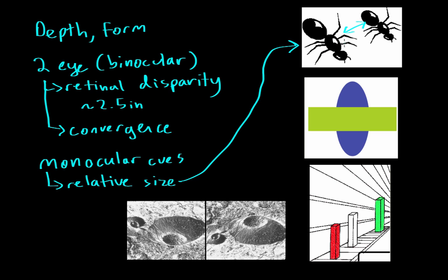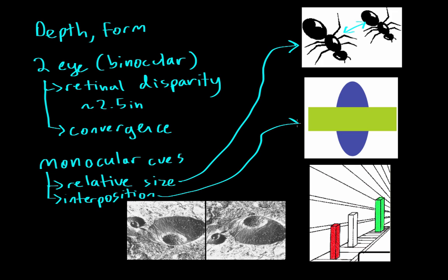We really only need one eye for relative size — we can see the relative size of things and infer the proximity of the object with just one eye. Another monocular cue is interposition. For example, you only need one eye to see that a rectangle is in front of an oval, and we can infer that the rectangle is therefore closer to us.